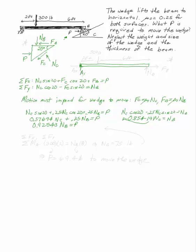At A I have a pin, so I'm going to have AY and AX. And I have this 300-pound load, which acts at two feet away from A, and six feet away from B. And at B, important, important, important, I have equal and opposite forces from where I had B over here.